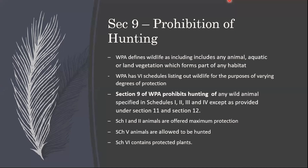Two aspects of WPA are very helpful for conservation. First is the system of protected areas. Second is the scheduling of wildlife. The concept of bringing animals under various schedules was introduced under WPA. Section 9 of WPA states that all scheduled wildlife are to be protected. All kinds of hunting activities — killing, taxidermy, taking animals as trophies — are prohibited and strictly punishable under law. Wildlife has a very broad definition under WPA, including any animal, aquatic or land organism which forms part of any habitat, so all plants and animals are protected.